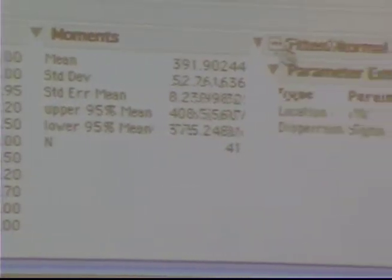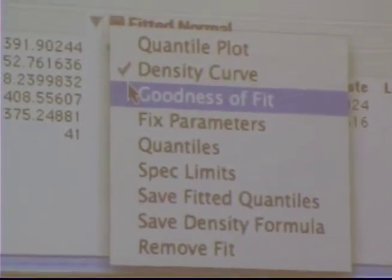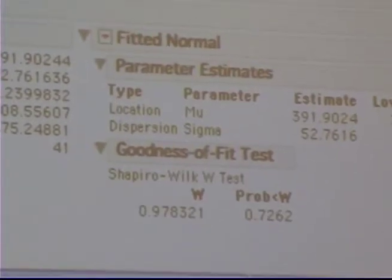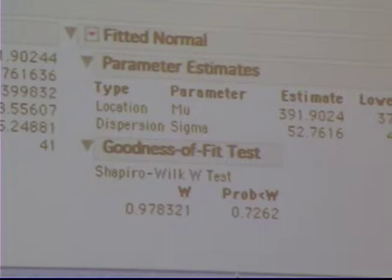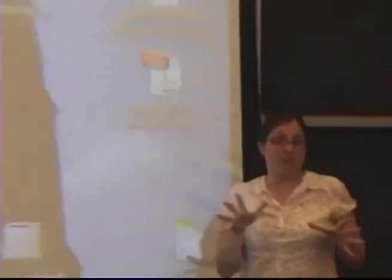And then it has some statistics here that may or may not mean anything to you. But, essentially, the goodness of fit test is what we use to see if it's a significant deviation from normal. And when this probability is less than 0.05, you've significantly deviated. So, this might be the one thing that you've done to say, okay, I can use parametric statistics on this. I don't have to go to nonparametric.